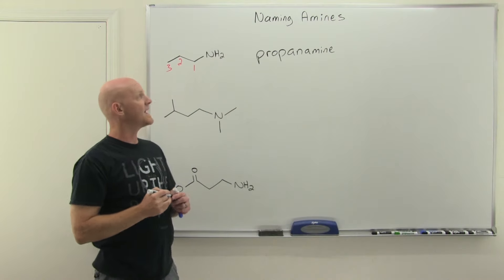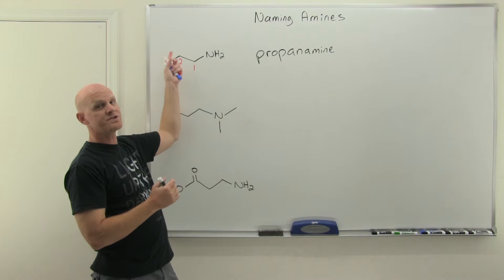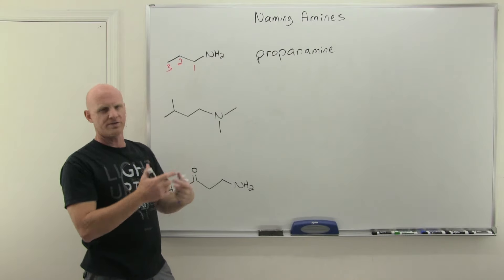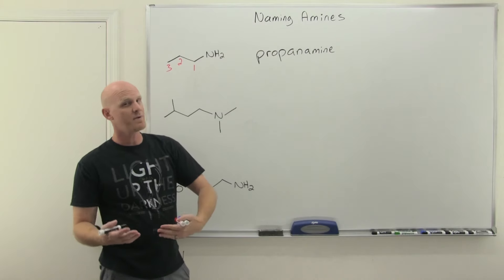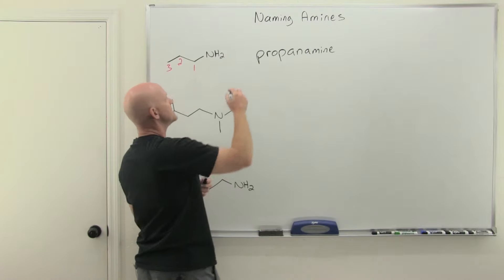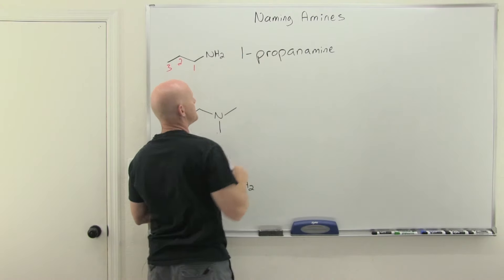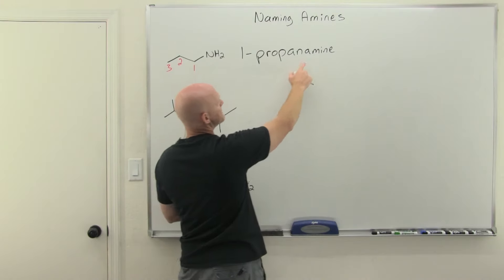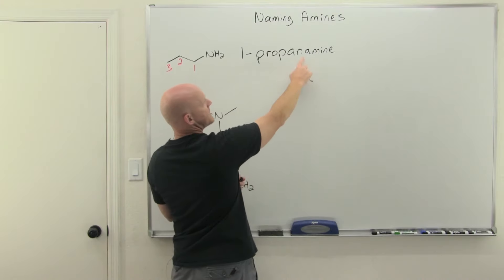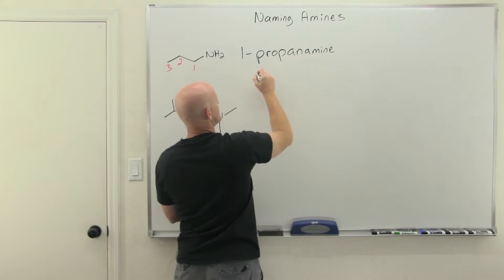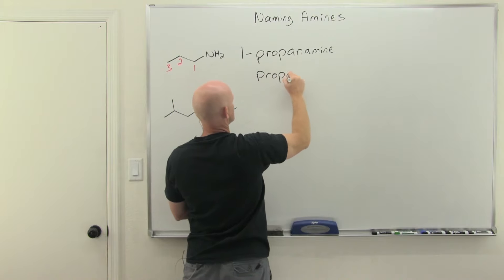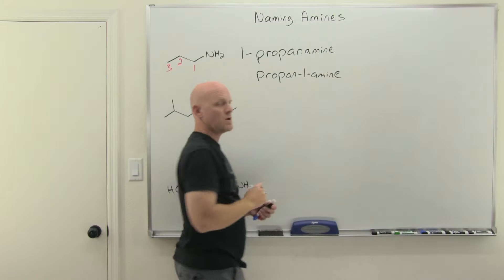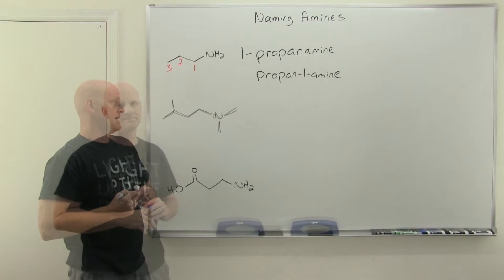We're not done yet because that amine could have been located on carbon one or two. It couldn't have been located on carbon three because then we would have just called that one carbon one. Because there's a 1-propanamine and a 2-propanamine, you've got to give its indication. Here I'm going to put that one at the beginning of the name, 1-propanamine, and that's acceptable. But you'll also find it right before the suffix as well, so you might also see this listed as propan-1-amine. Both acceptable IUPAC names here.